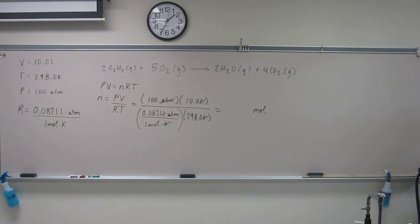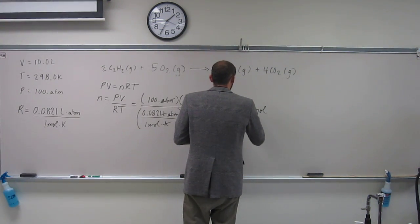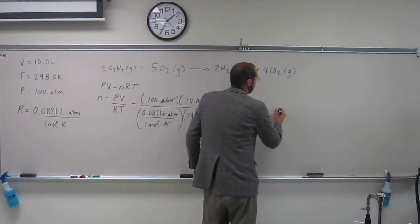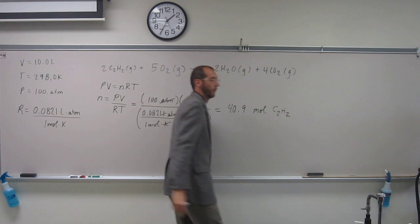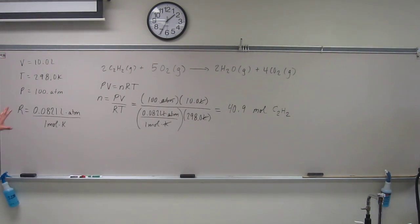So 100 times 10 divided by 0.0821, and then divide that by 298. The number of moles that I received to 3 sig figs is 40.9 moles of acetylene. Is everybody okay with doing that calculation? That's just like a normal PV equals nRT calculation.